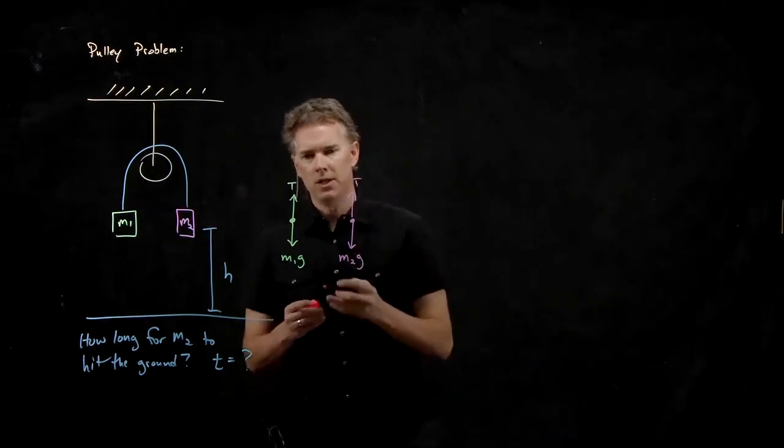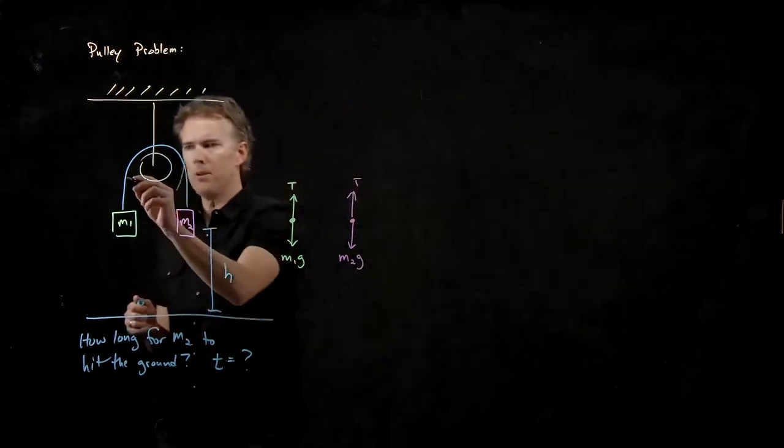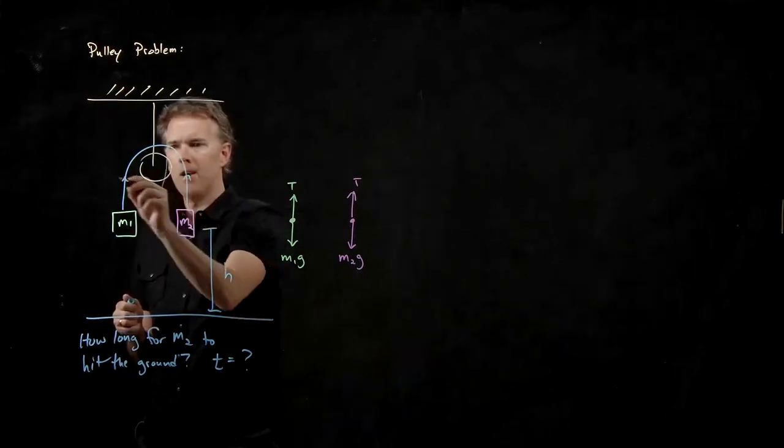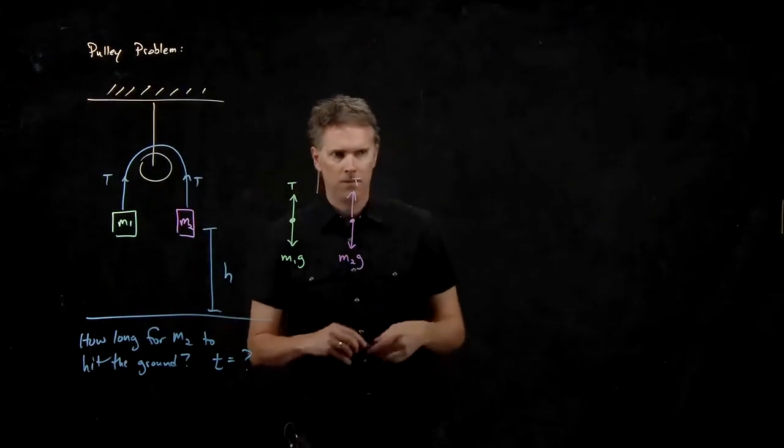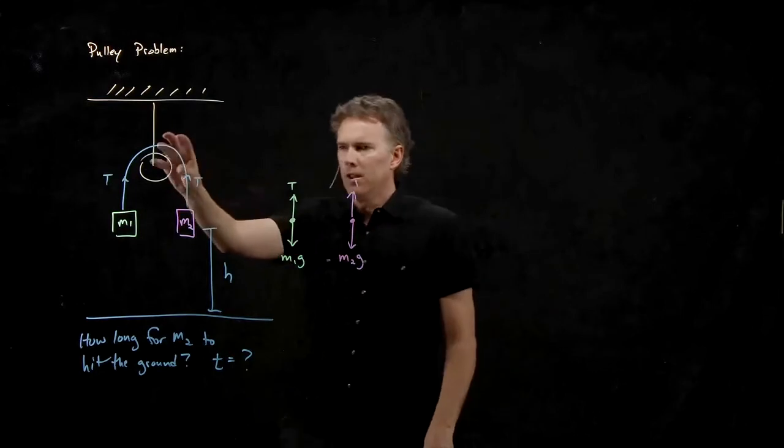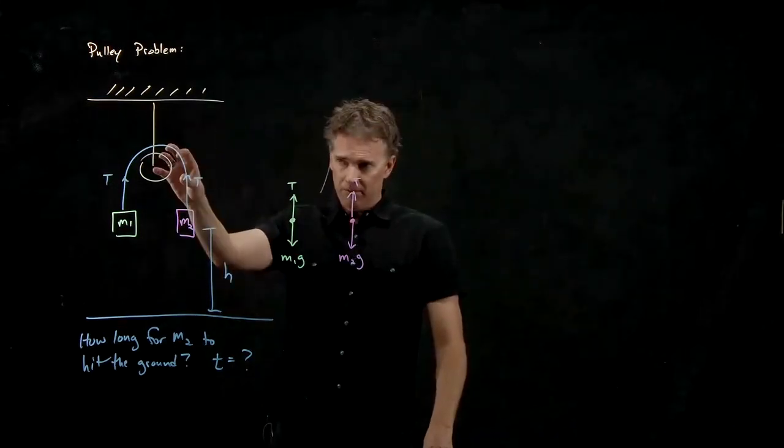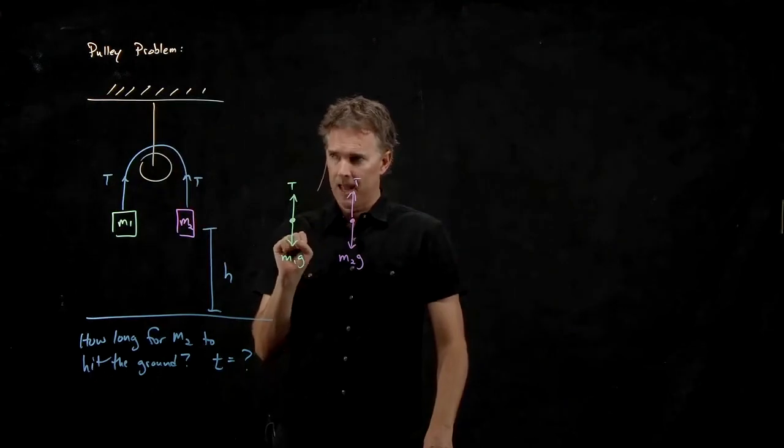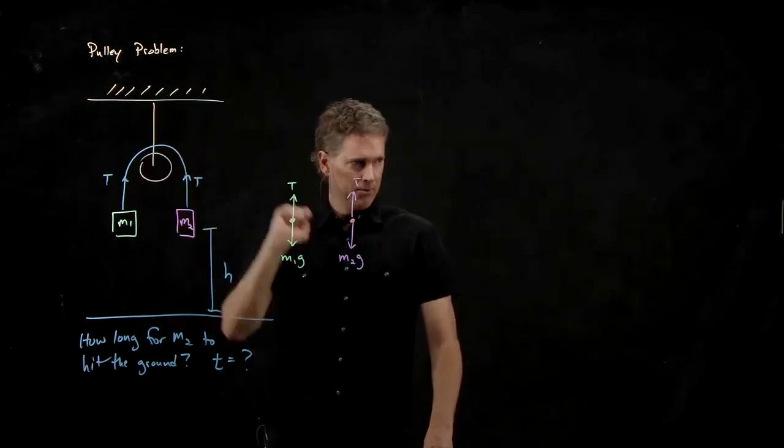In this problem, the action-reaction pair is that tension T. Now, there's a little bit of a caveat, which is in these problems that we're attacking right now, the pulley is massless and frictionless. And so the tension T is everywhere the same throughout the rope.